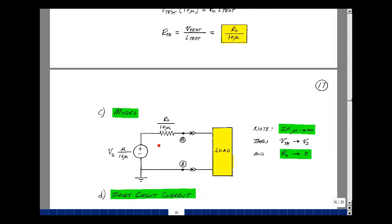So my model is having the Thevenin voltage and the Thevenin resistance. Now I can hook up my load and solve for whatever parameters I'm interested in.